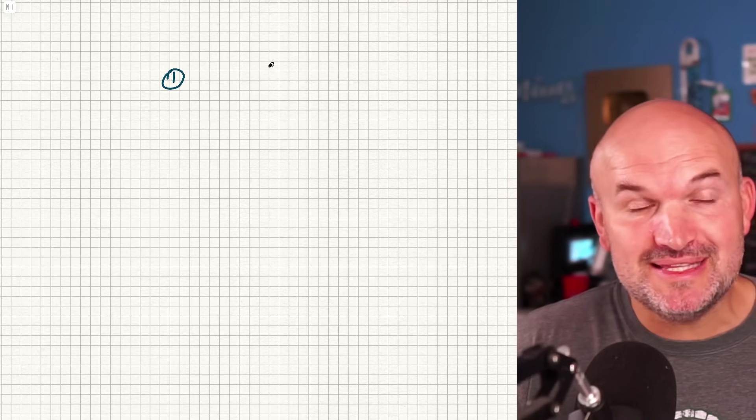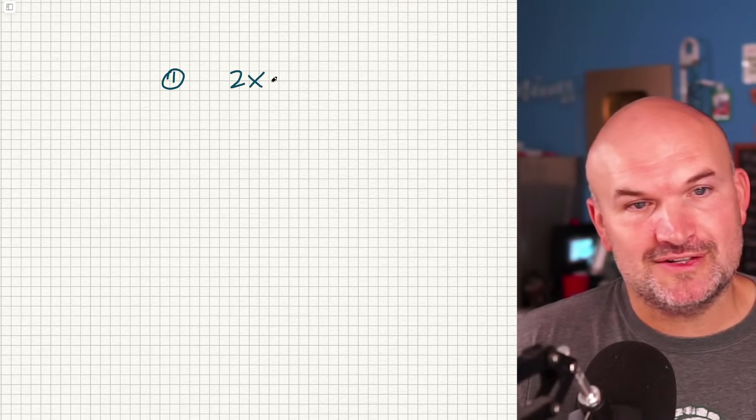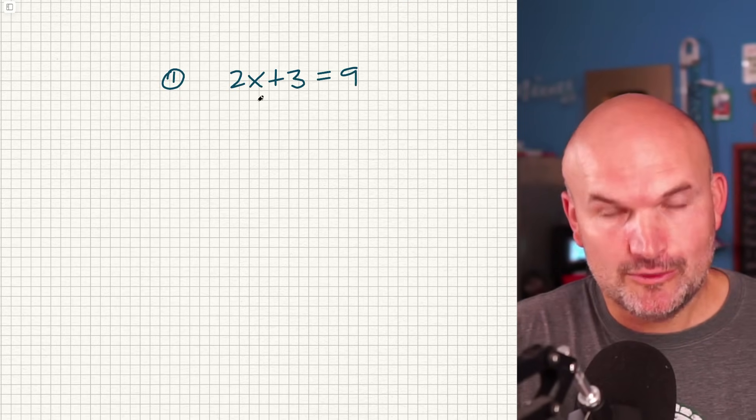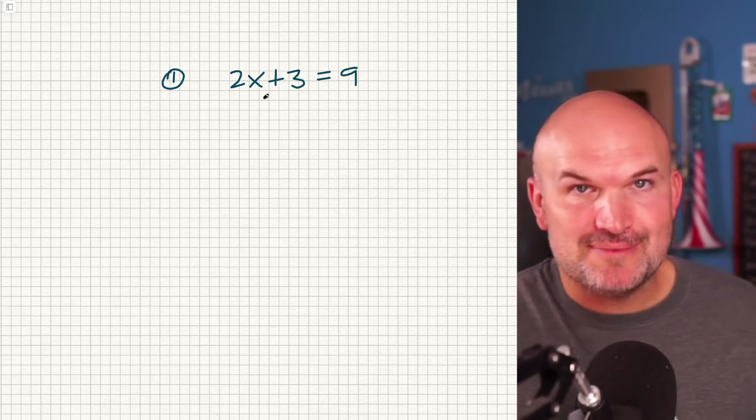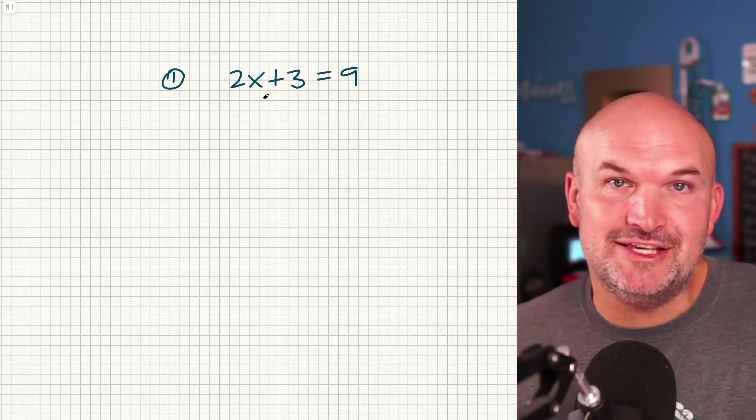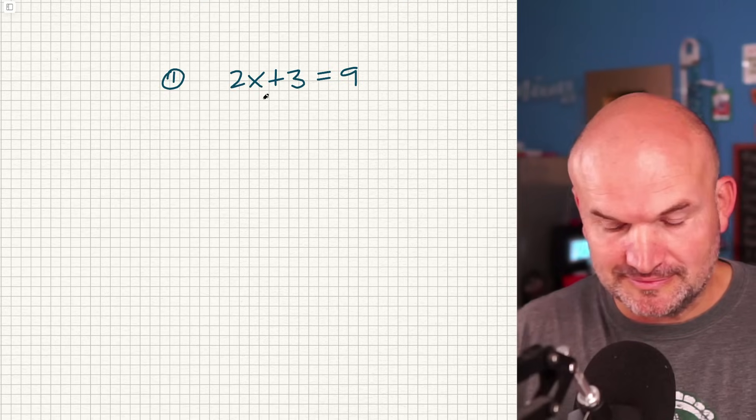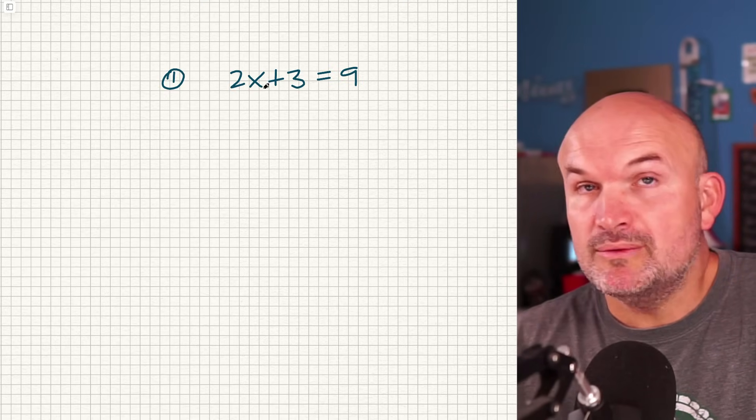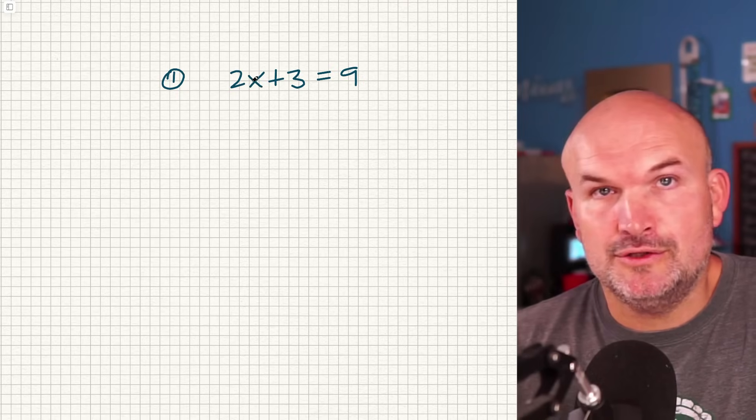The first one we need to definitely cover is going to be the easy example for solving a two-step equation. This is essential to understanding how to solve equations. We're past the one-step, right? The reason why this is called two-step is because it's going to theoretically take you two steps to solve. So in this example, I have 2x + 3 = 9. What we want to do is find the value of x.